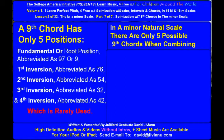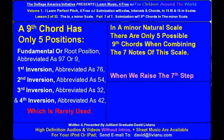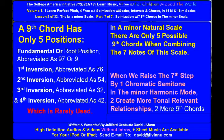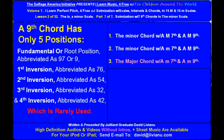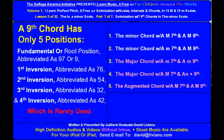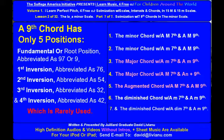In a minor natural scale, there are only 5 possible 9th chords when combining the 7th notes of this scale. When we raise the 7th step by one chromatic semitone in the minor harmonic mode to create more tonal relevant relationships, two more 9th chords are possible for a total of 7 9th chords: the minor chord with a major 7th and a major 9th; the minor chord with a minor 7th and a major 9th; the major chord with a minor 7th and a minor 9th; the major chord with a major 7th and an augmented 9th; the augmented chord with a major 7th and a major 9th; the diminished chord with a minor 7th and a minor 9th; and the diminished chord with a diminished 7th and a minor 9th.